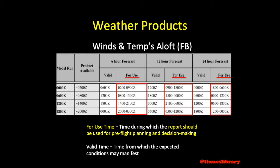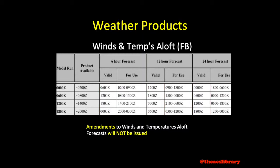Put simply, the for-use time is the time the data should begin to be used for pre-flight planning and decision-making, while the valid time may be seen as the time when the forecasted conditions may manifest. Amendments are not issued to winds and temperatures aloft forecasts.